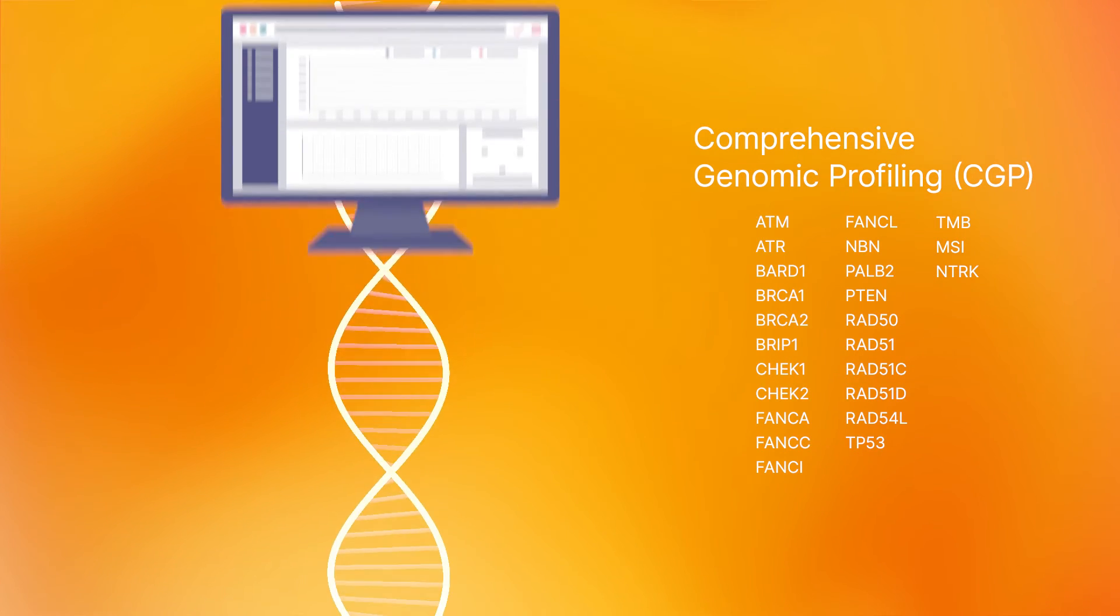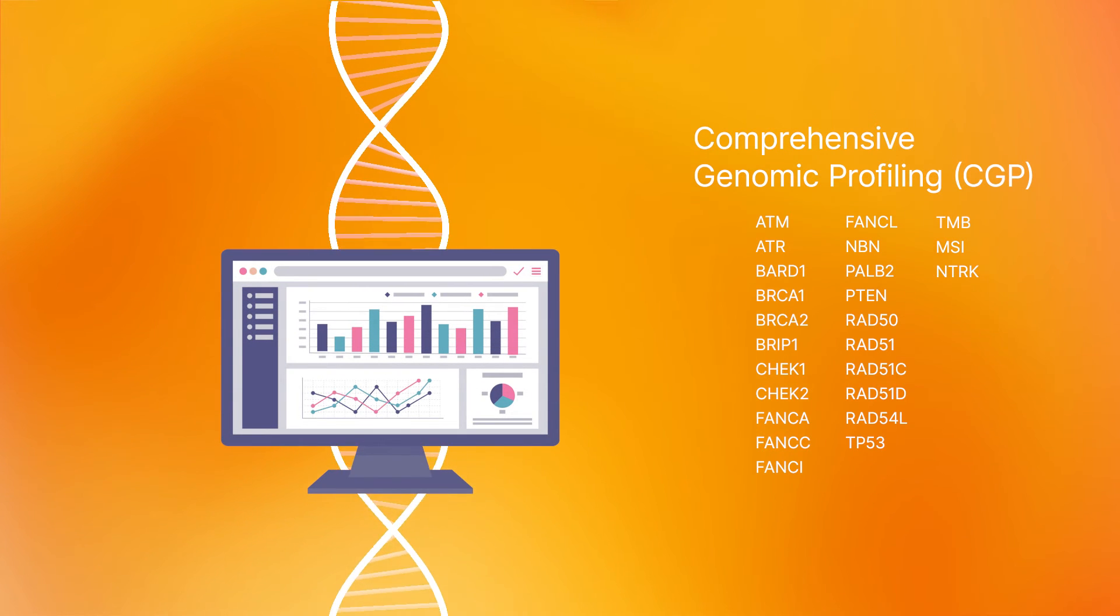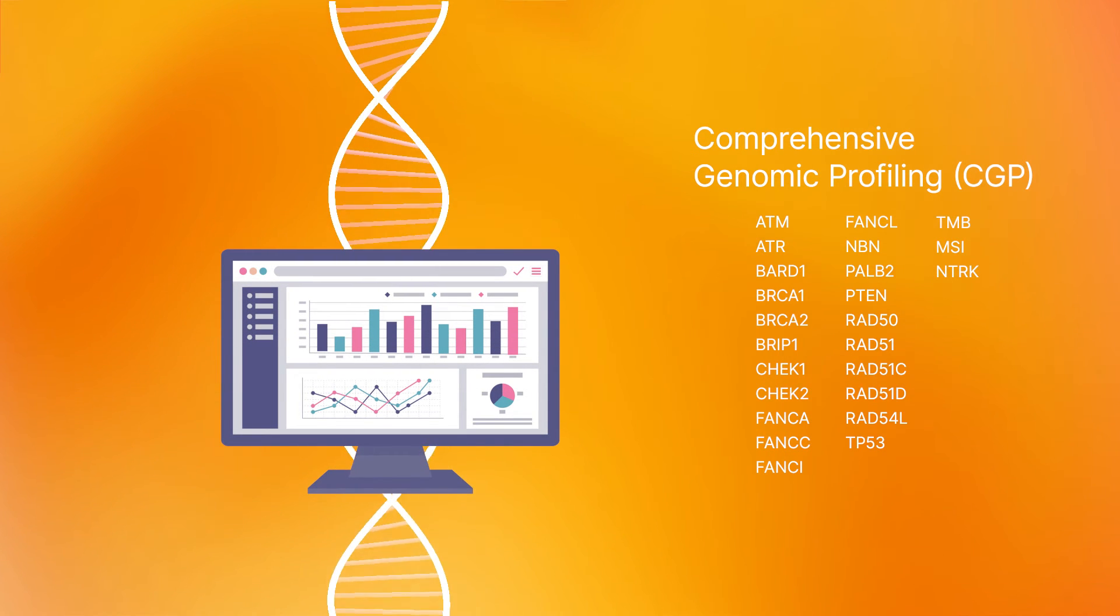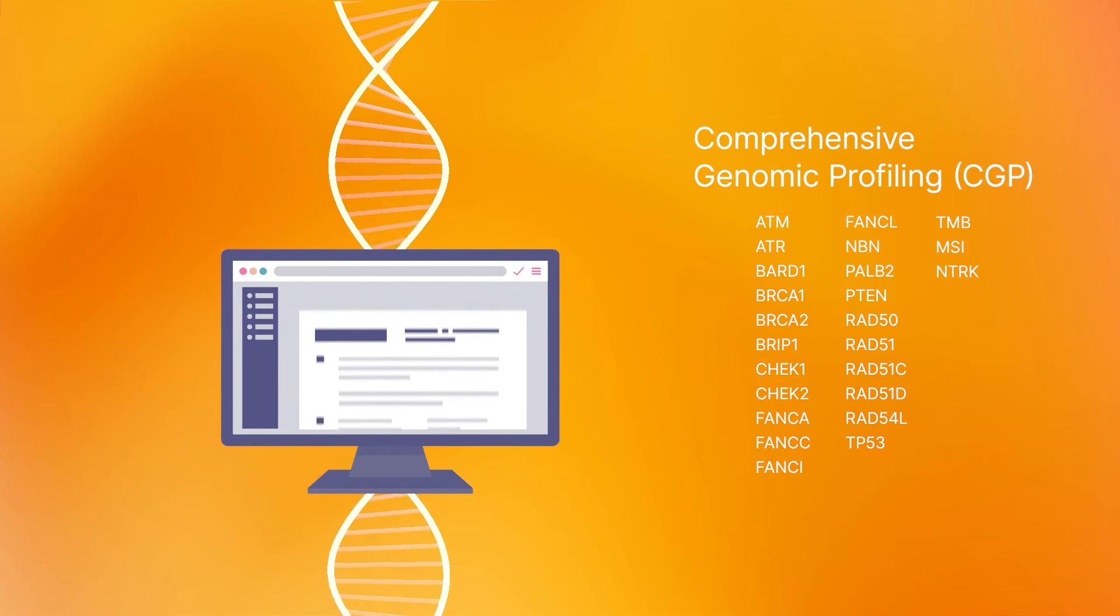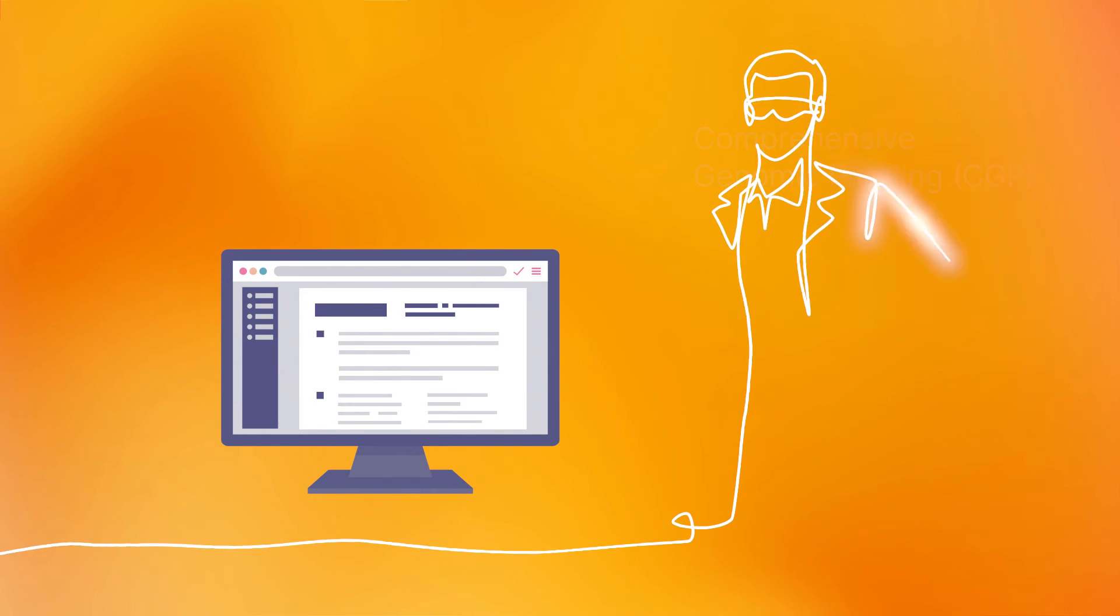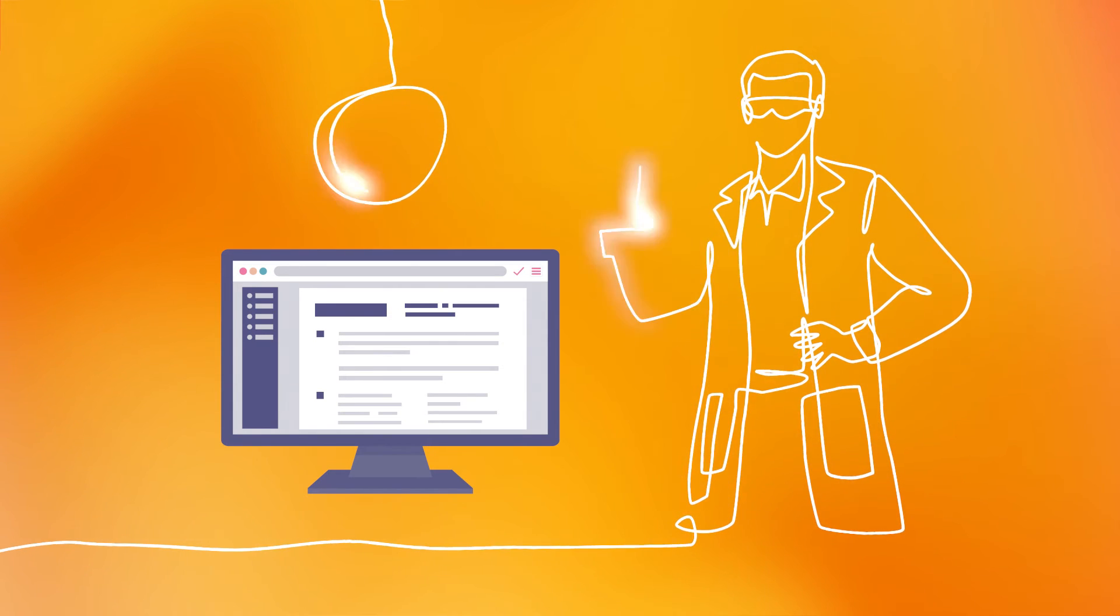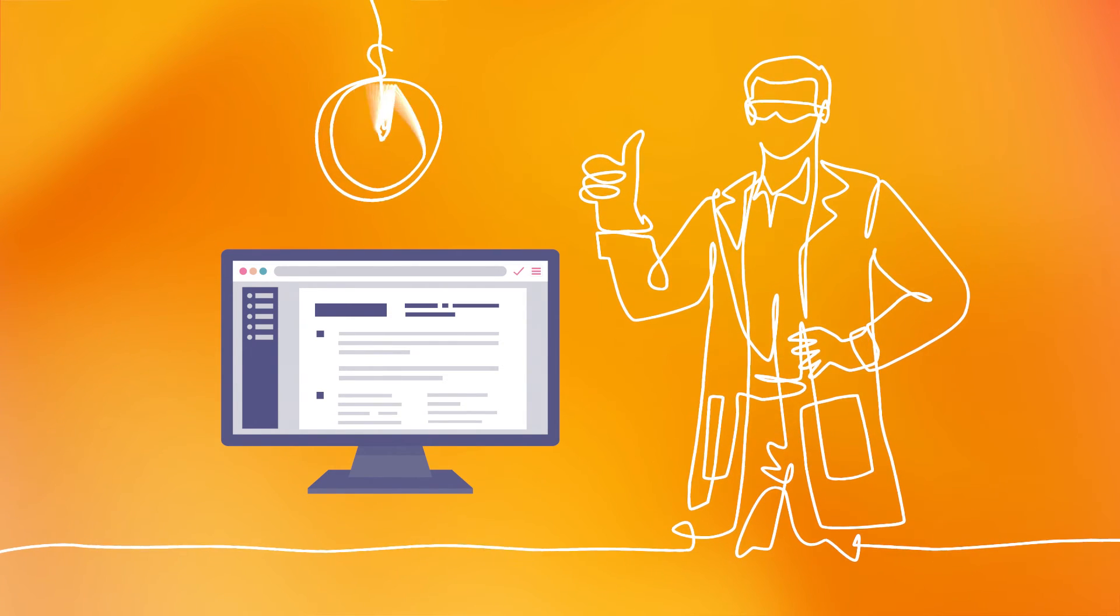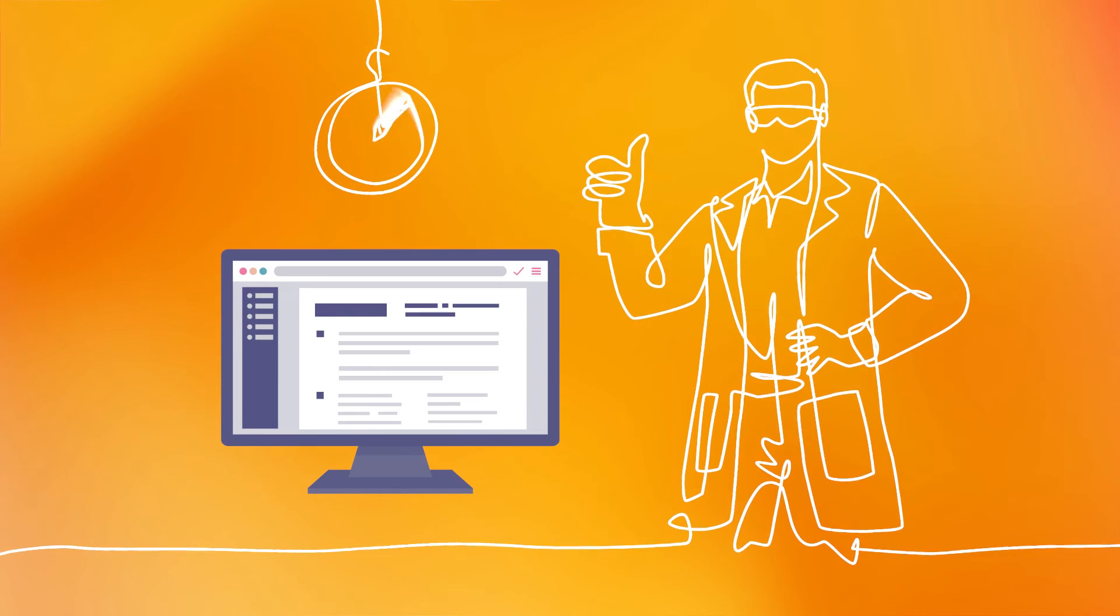CGP is an NGS-based assay that looks across the genome and simultaneously interrogates hundreds of genes in a single test. Identifying HRD status as part of CGP bypasses iterative testing processes, conserving staff and lab resources, and saving precious sample and time.